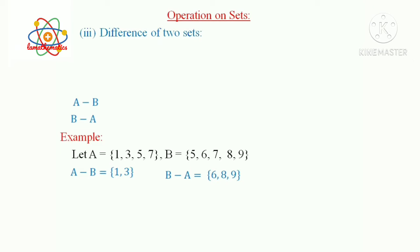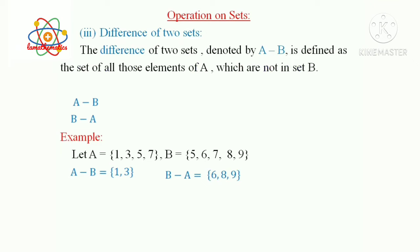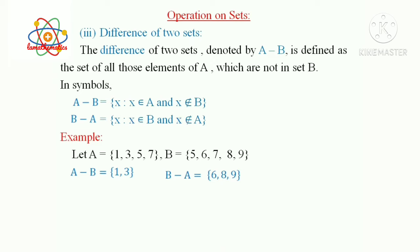Then we can define the difference of two sets. The difference of two sets, denoted by A−B, is defined as the set of all those elements of A which are not in set B. In set builder form: A−B = {x : x ∈ A and x ∉ B}. Similarly, B−A = {x : x ∈ B and x ∉ A}.